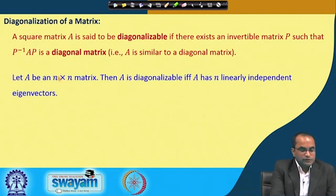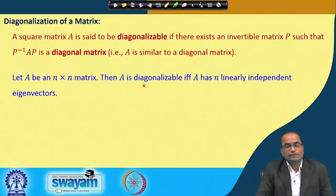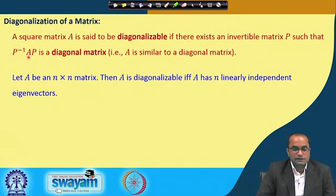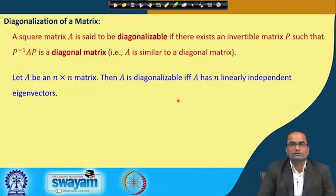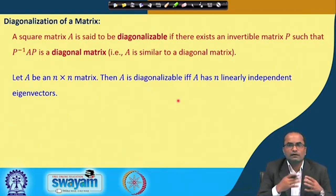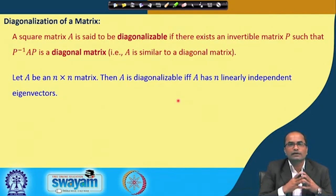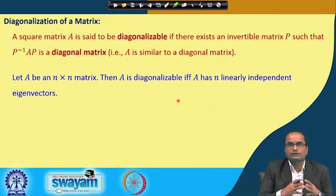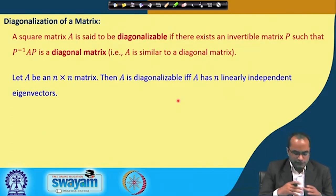The key result is: A is diagonalizable if and only if A has n linearly independent eigenvectors. If we get n linearly independent eigenvectors then A can be diagonalized; if not, A is not diagonalizable. We will not go through the formal proof here, but will see many examples showing how this works.